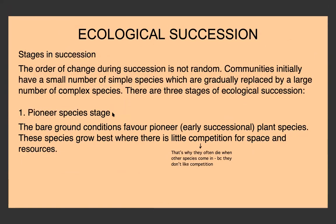There are a few stages in ecological succession. The order of change is not random — it will pretty much always happen the same way in all types of ecological succession. The communities initially have a small number of simple species, and these are gradually replaced by a larger number of more complex species. The first stage is the pioneer species stage. The bare ground conditions favour pioneer, or early successional, plant species that grow where there's little competition for space and resources. As the community evolves, these pioneer species will often die as other species come in because there's more competition.